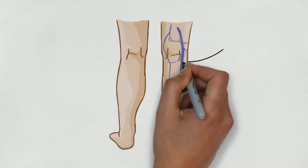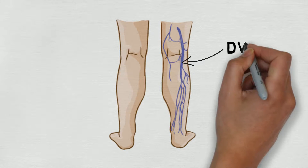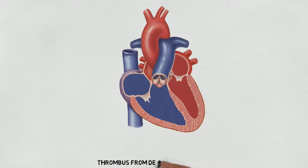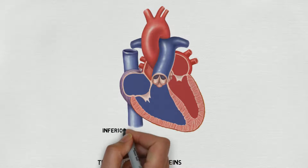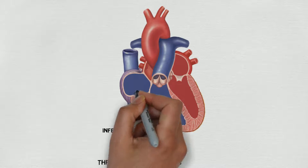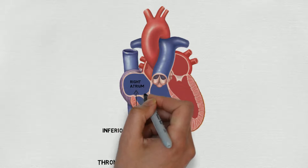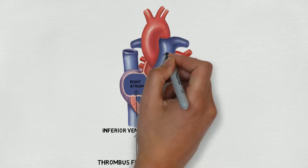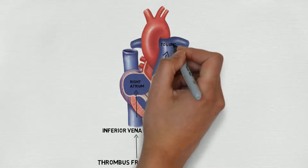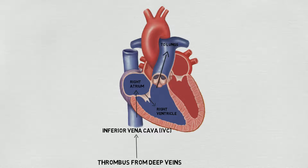DVTs are in the deep veins. They originate there and travel up through the veins to the IVC, then into the right atrium, right ventricle, and then they should go to the lungs, right? But this guy got a stroke, which comes from the left ventricle. So that DVT had to cross somewhere.